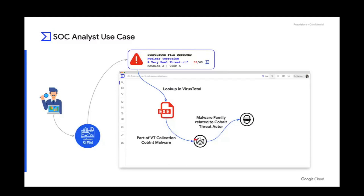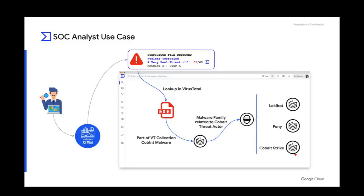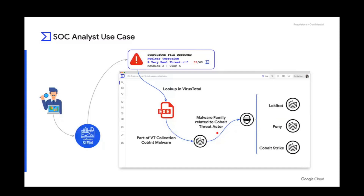This malware is associated with a threat actor, which is Cobalt. The SOC analyst now knows they are not being targeted by a script kiddie, but a real APT threat. He decides to investigate further and reach more collections related to this threat actor — LokiBot, Pony, and Cobalt Strike. From there, the SOC analyst will be able to get rules like IDS rules, Sigma rules, Yara rules, and IOCs such as hashes, domains, and IPs from the Cobalt malware family, LokiBot, Pony malware family, and Cobalt Strike.